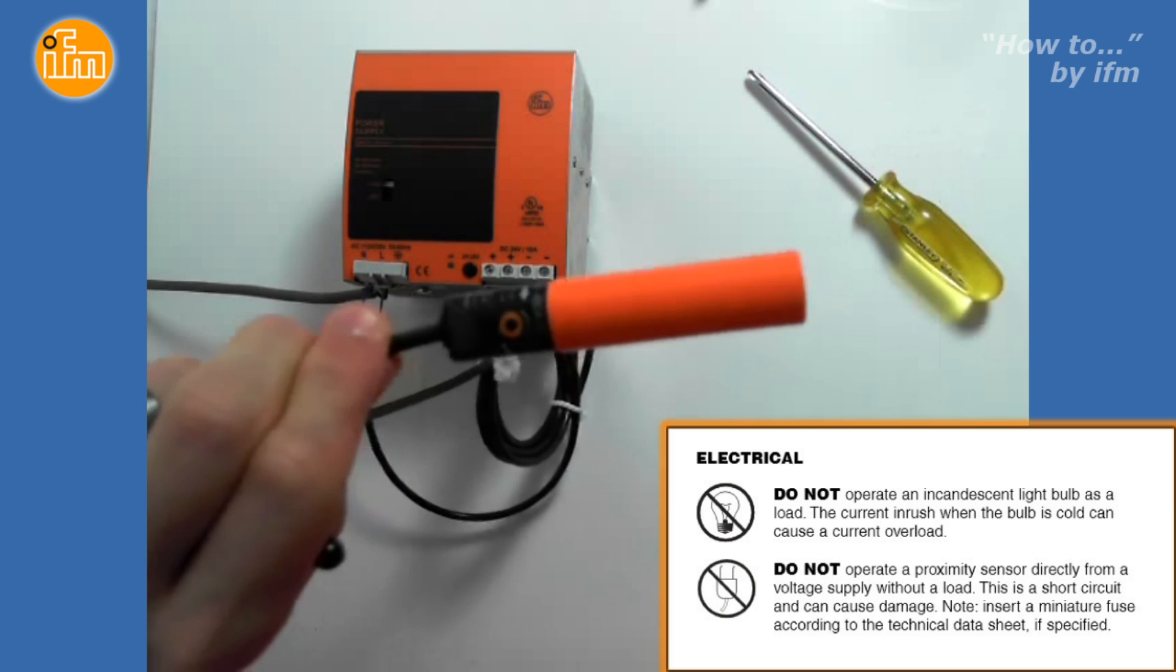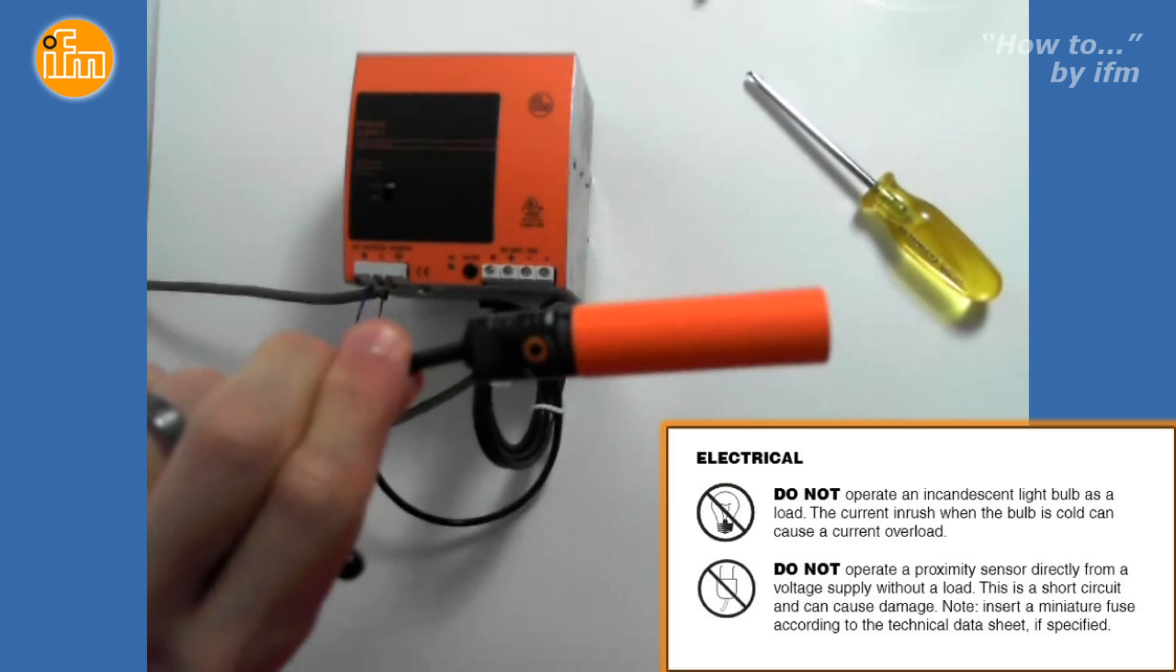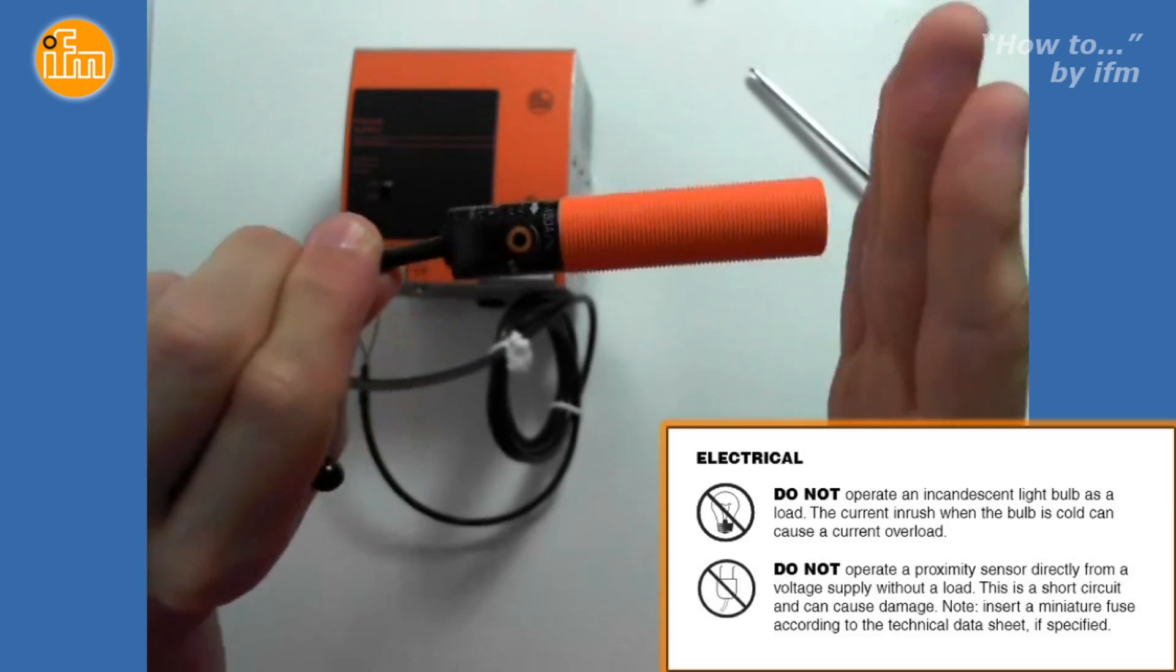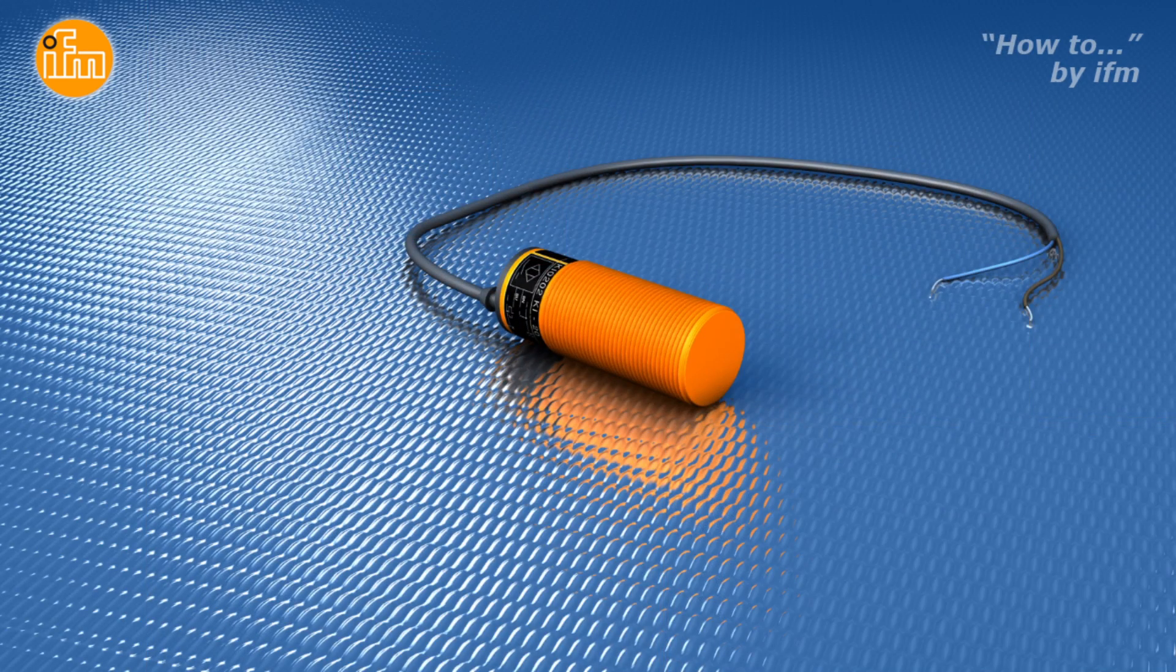A load must be used for proper function of the sensor. It is important to note that an incandescent light bulb should not be used as a load because the current inrush from a cold bulb can cause an overload condition.